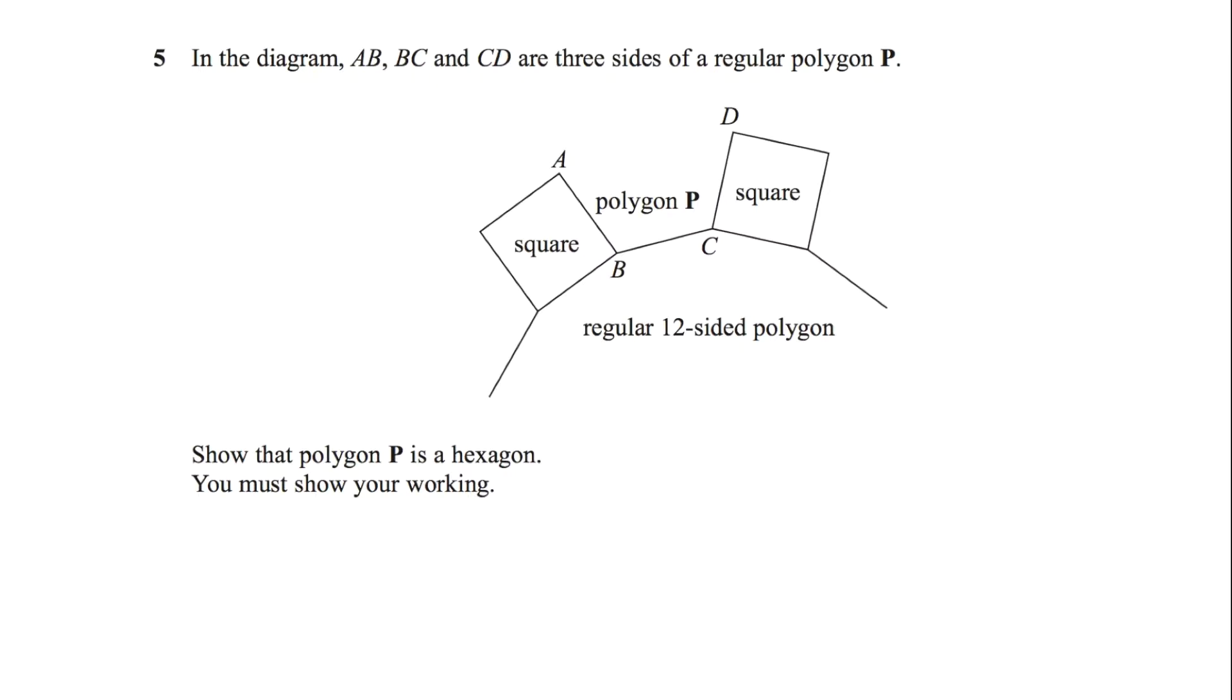Hi and welcome to Math Together. In this lesson we'll be focusing on question number five. In the diagram A, B, C and D are three sides of a regular polygon P. Show that polygon P is a hexagon. You must show your working.